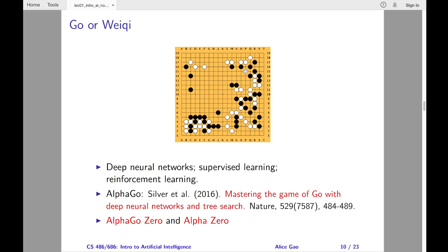Next, let's look at the game of Go, or Weiqi. This game was invented in China about 2500 years ago. Two players take turns putting black or white stones on a 19x19 grid. The goal is to occupy a larger territory on the board.